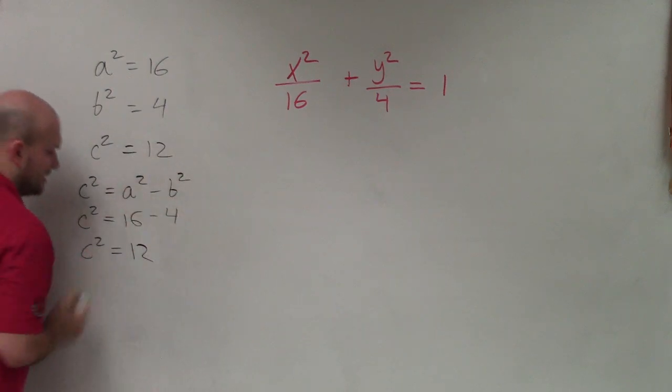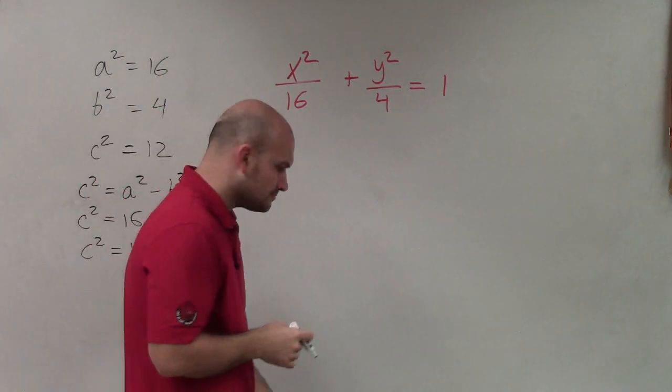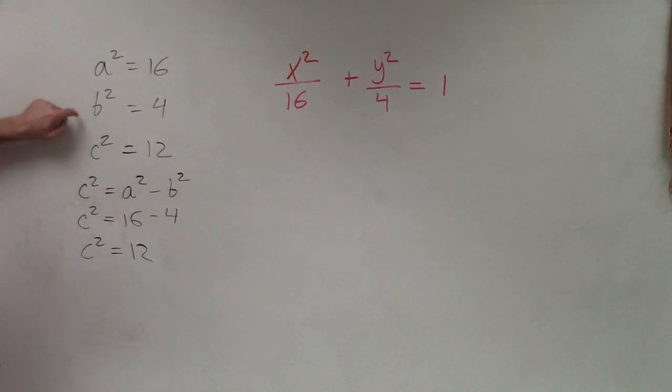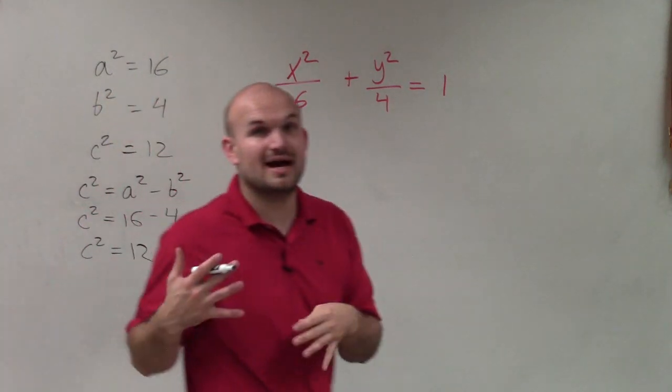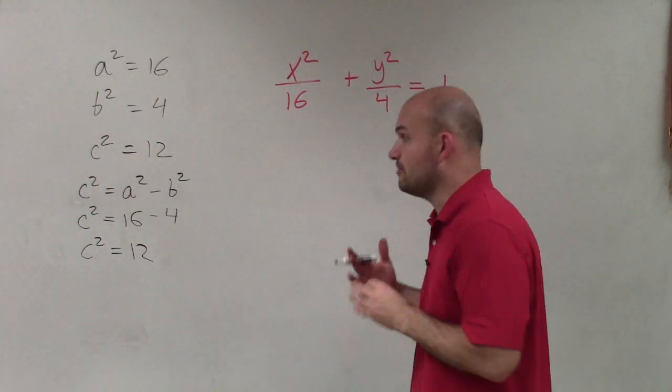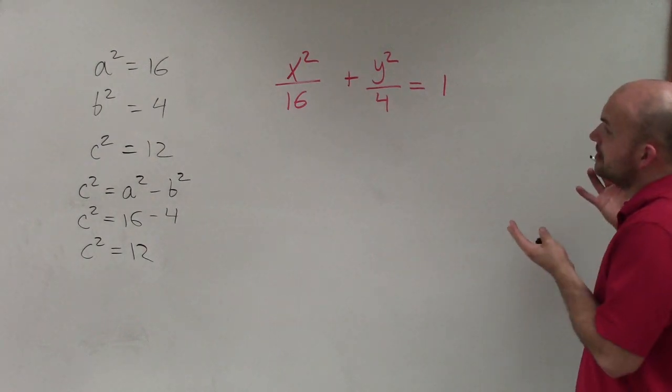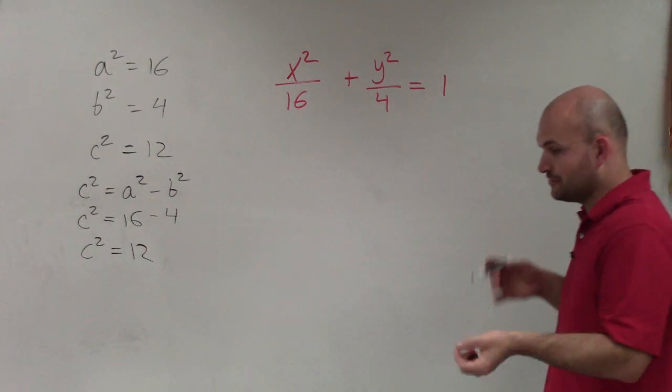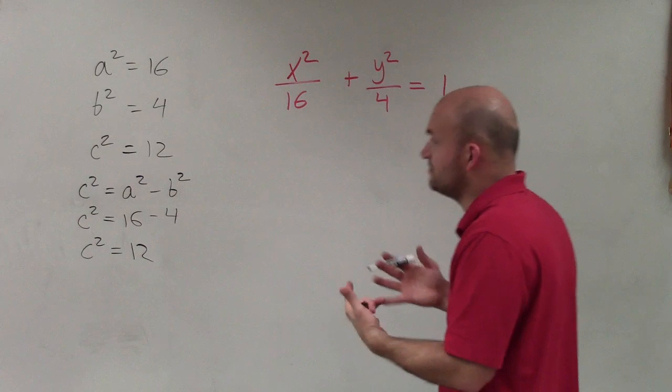So now I can just write that in there. So now that I've figured out a, b, and c, now it's time for me to understand where my vertex is. Now, remember your vertex is going to be, I'm sorry, not the vertex. The center of your ellipse is always going to be the center.